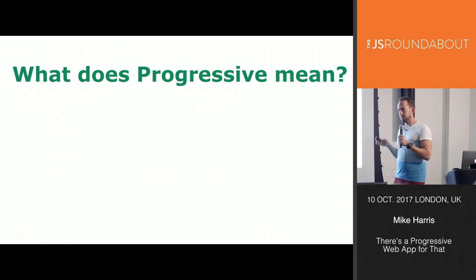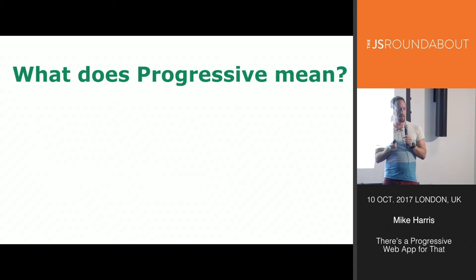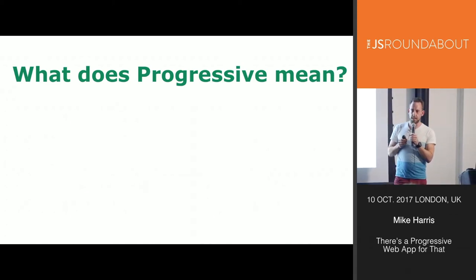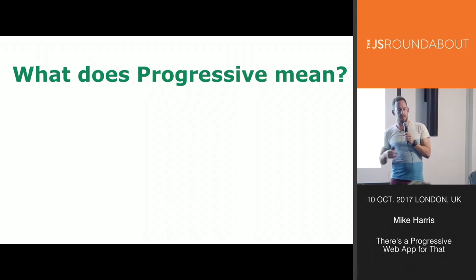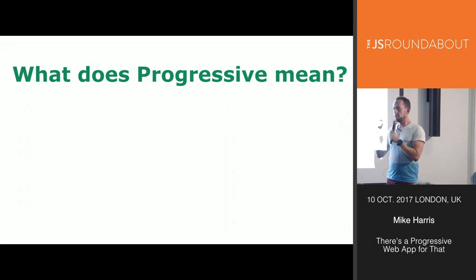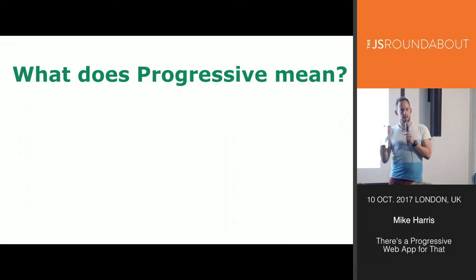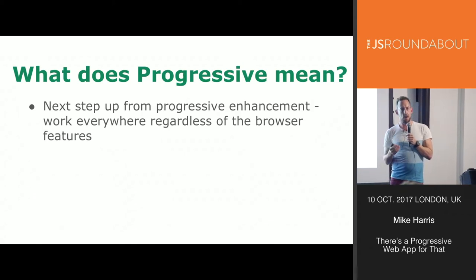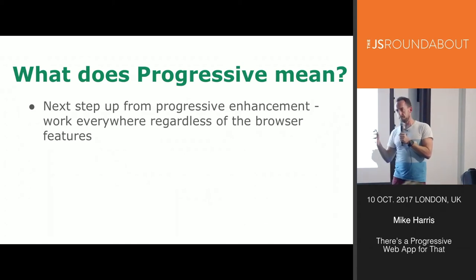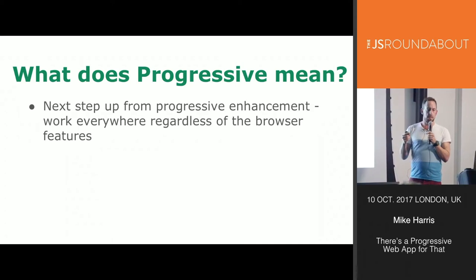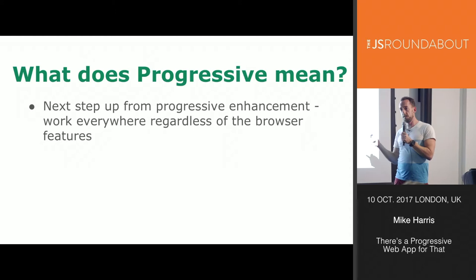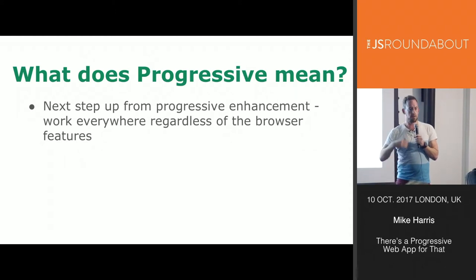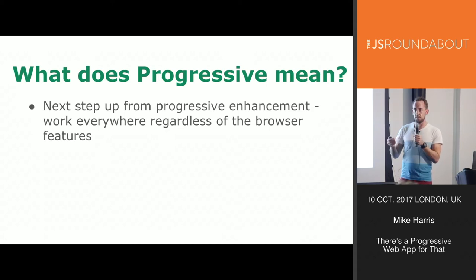But what does 'progressive' mean? Everyone in the JavaScript world has heard of progressive enhancement. In the old days we had static HTML pages, then JavaScript came along to enhance our pages — the idea being JavaScript can make the app faster and feel better, but if you didn't run JavaScript it would still work well. It's the same concept here: there are 11 features Google lists, each improving the experience, but if a platform doesn't support one, it shouldn't break your app.